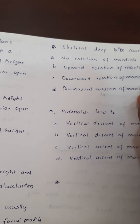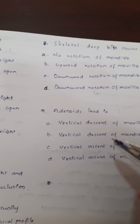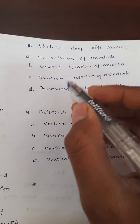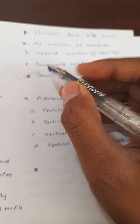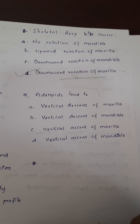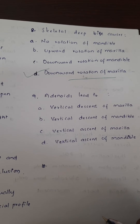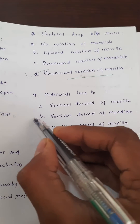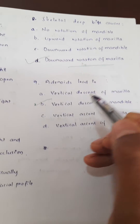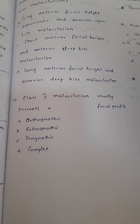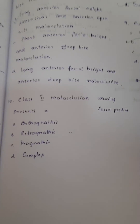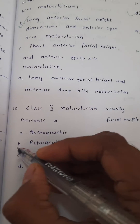Skeletal deep bite causes downward rotation of the maxilla. Adenoids lead to vertical descent of the mandible. Class 2 malocclusion usually presents a retrognathic profile.